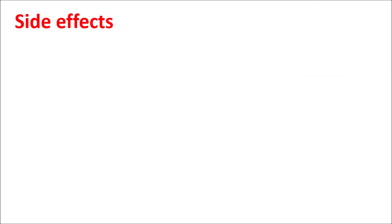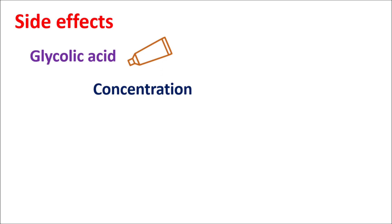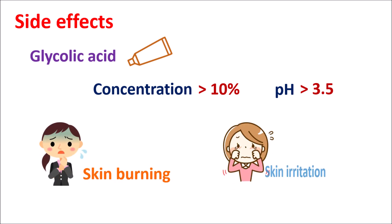Now let us know the side effects of glycolic acid. Normally glycolic acid is well tolerated, but when used at concentrations greater than 10%, or when the pH of the cream is greater than 3.5, glycolic acid can produce side effects like skin burning and skin irritation. Particularly at higher pH, it can produce skin irritation. This cream is available at lower strengths as well as higher strengths, and at higher strengths, side effects like skin burning and skin irritation are more pronounced.